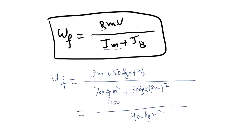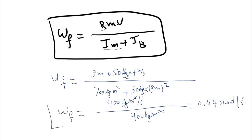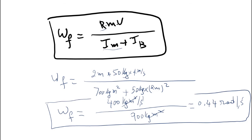The numerator is 400 kilogram meters squared per second. The denominator is 700 plus 200 = 900 kilogram meters squared. The kilogram meter squared units cancel, giving 400 over 900, which is 4 over 9, approximately 0.444 radians per second. This is the angular velocity of the merry-go-round and the boy together just after the boy stepped on.